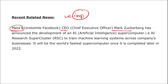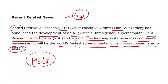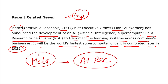Another important related news: Meta's CEO Mark Zuckerberg has announced the development of an Artificial Intelligence super computer — the AI Research Super Cluster — to train machine learning systems across companies and businesses. It will be the world's fastest supercomputer once completed later in 2022. The name of Meta's supercomputer is AI RSC, that is, Artificial Intelligence Research Super Cluster.